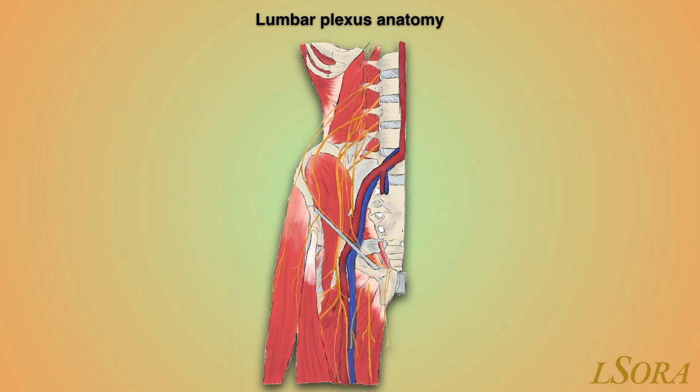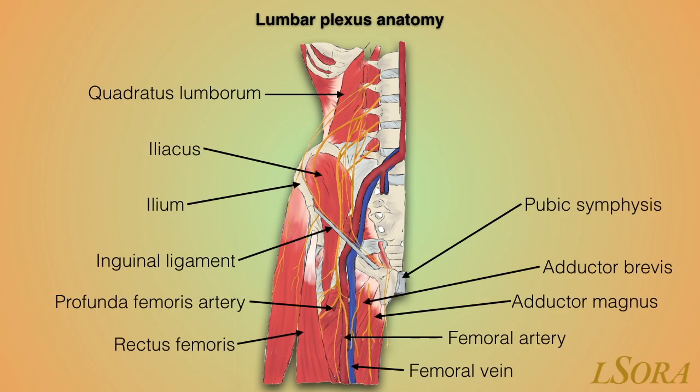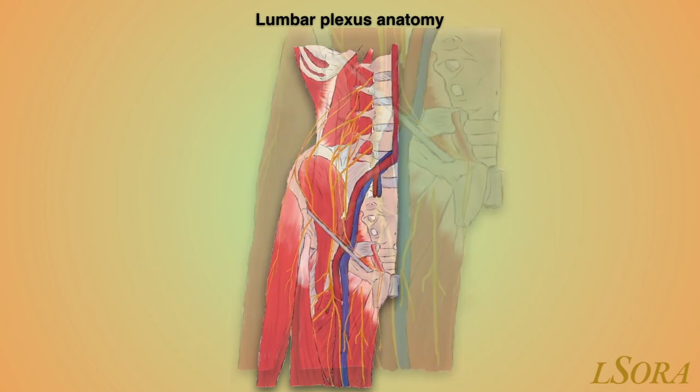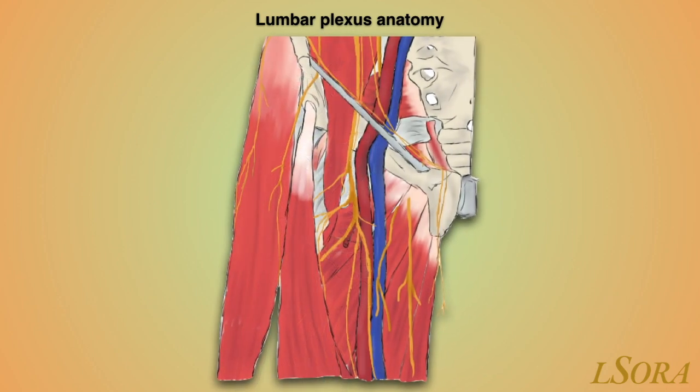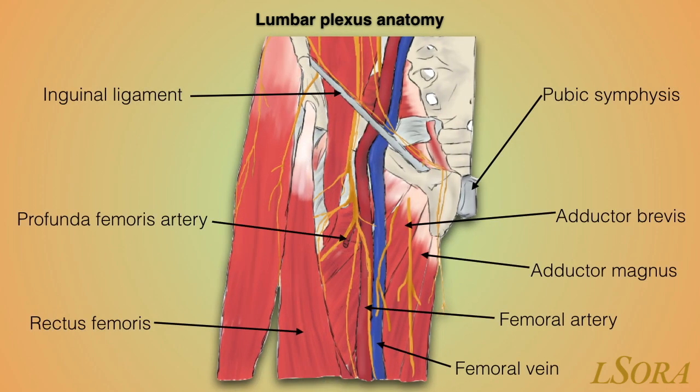With the psoas muscles and sartorius removed you can see a little bit more of the anatomy demonstrated here. You can see quadratus lumborum lying behind the lumbar plexus, iliacus lying on the internal surface of the ilium, and the inguinal ligament overlying the femoral vessels with the femoral nerve. This close up of the inguinal region emphasises the area we will scan, with the inguinal ligament running from the ilium to the pubic bone, the femoral vessels running underneath it, with the femoral nerve lying laterally.